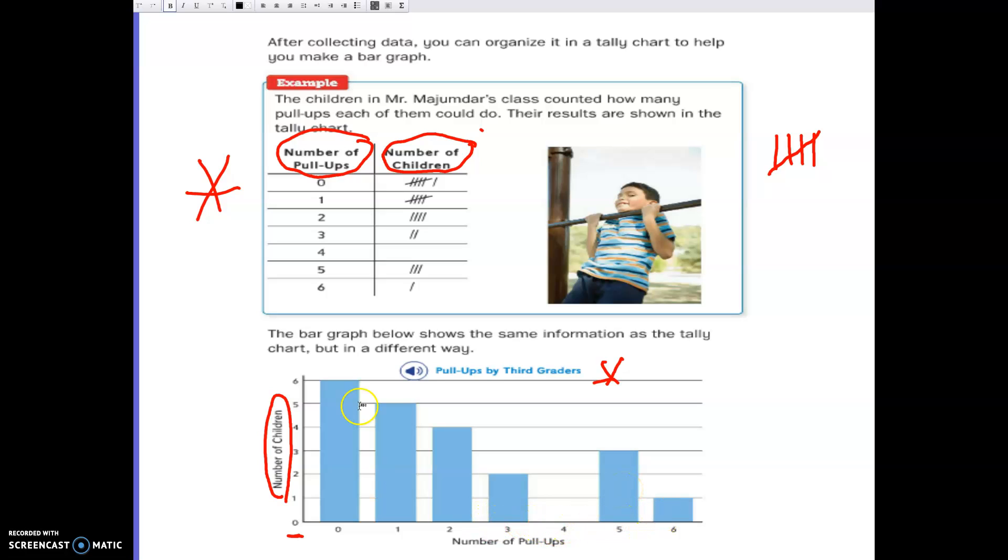So this is telling me that 6 children did 0 pull-ups, 5 children did 1 pull-up, 4 children did 2 pull-ups, 2 children did 3 pull-ups, no one did 4 pull-ups, and 3 children did 5 pull-ups, and 1 child did 6 pull-ups.